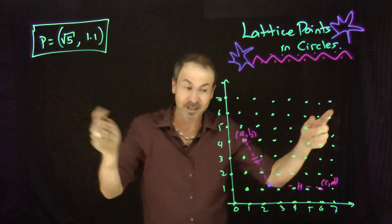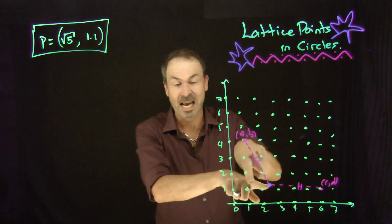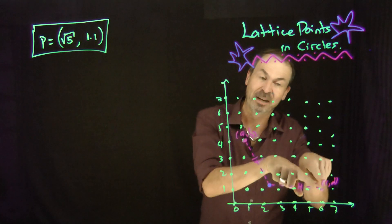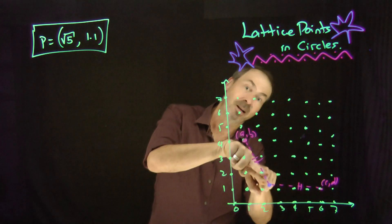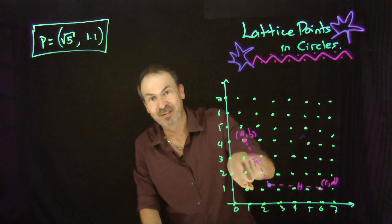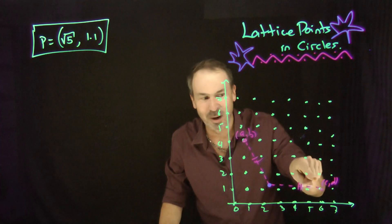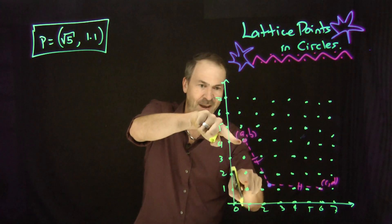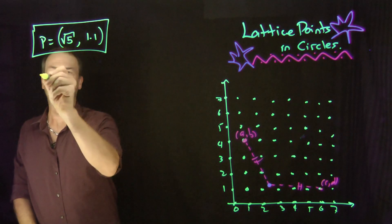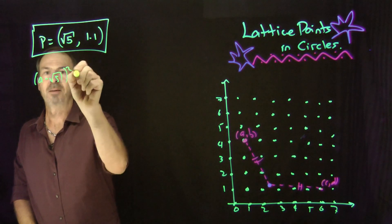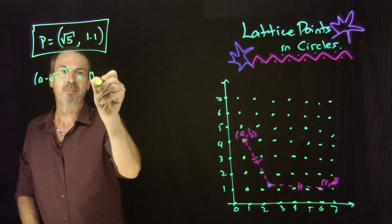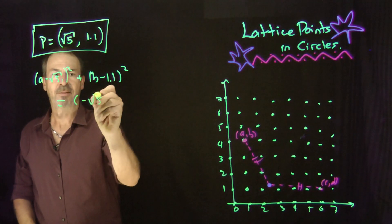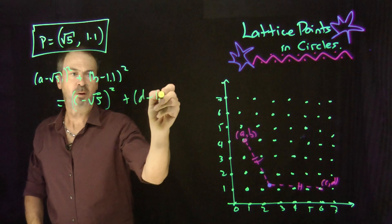Since we're using coordinate systems at 90 degrees, I can see a little right triangle. So if I want this distance — the hypotenuse of a right triangle — Pythagoras says the distance squared is just the difference of the x-values squared plus the difference of the y-values squared. I want the same distances squared, therefore I want (a − √5)² + (b − 1.1)² to equal (c − √5)² + (d − 1.1)².